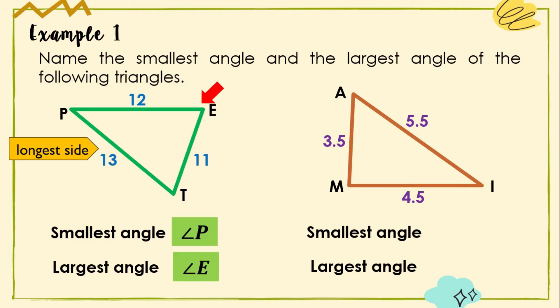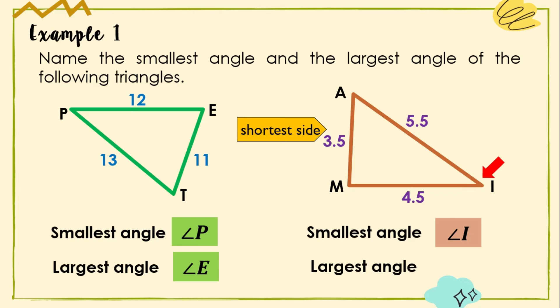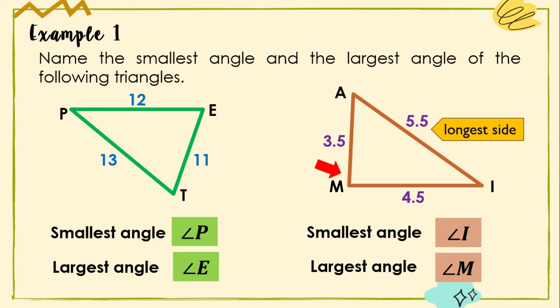Now let us have triangle AIM. It has side lengths: AM = 3.5, MI = 4.5, and AI = 5.5. Angle I is the smallest angle since it is opposite the shortest side AM. The largest angle is Angle M since it is opposite the longest side AI.